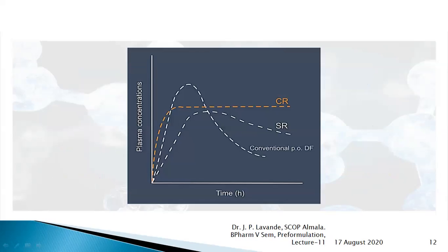In this graph of time versus plasma concentration, you can see three different profiles: CR (controlled release), SR (sustained release), and PODF (conventional per-oral dosage form). In the conventional per-oral dosage form, the drug concentration rises and then decreases rapidly.